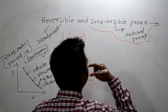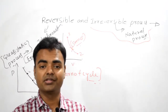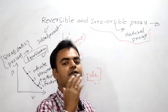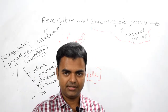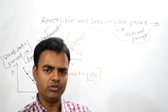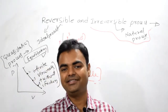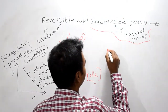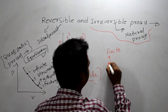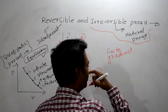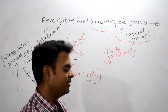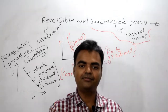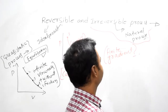Any process happening around us is an irreversible process. In engineering language, any process happening because of a finite gradient — such as a finite temperature or pressure difference — is known as an irreversible process. Alternatively, any process whose forward and backward paths are not the same is irreversible.